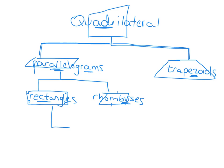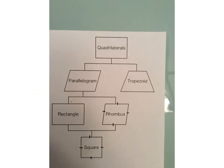Finally, I'm going to add the square to our family tree. A square has all equal sides and four right angles. A square is also a rectangle and also a rhombus because it falls underneath them on the family tree, and it's also a parallelogram and a quadrilateral. But it's not a trapezoid because it doesn't fall underneath it on the family tree.